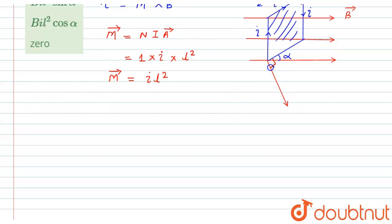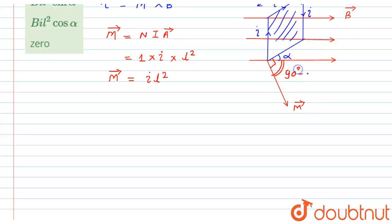The direction of this magnetic moment will be along the direction of the area vector, which is perpendicular to the square loop. Now, the square loop makes an angle of alpha with respect to magnetic field B, while the magnetic moment makes an angle of 90 degrees with the loop, so the angle between M and B becomes 90 minus alpha.